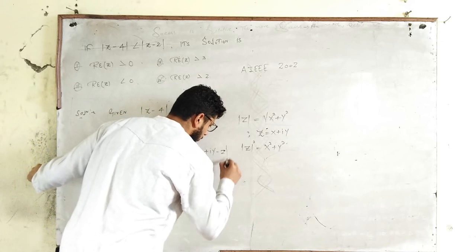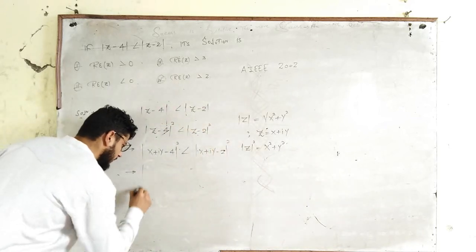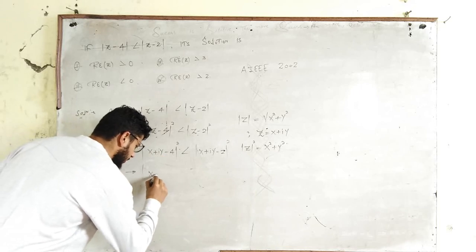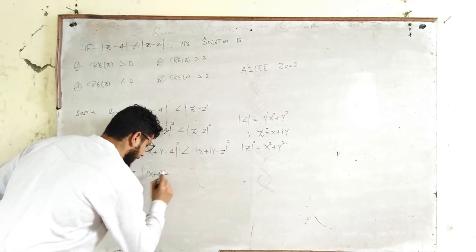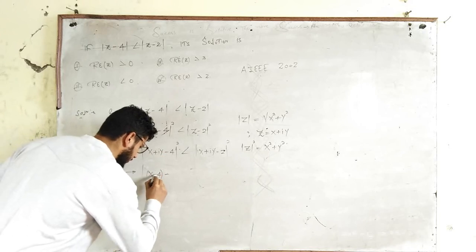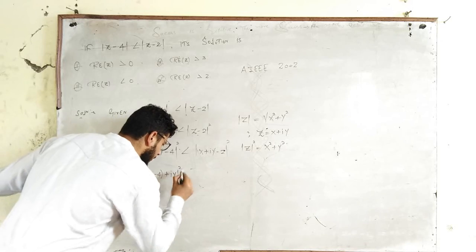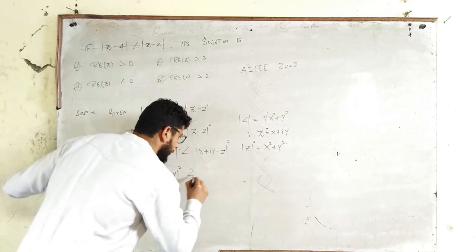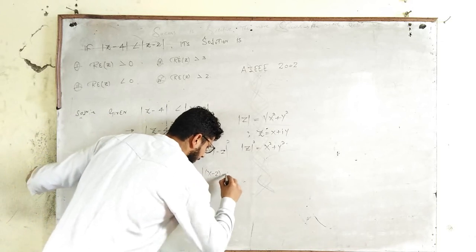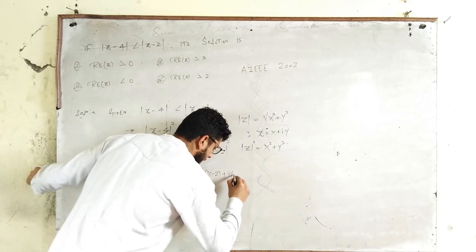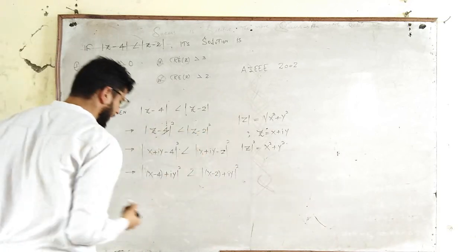I will just simplify it a little. I'll write (x - 4 + iy)² which is (x - 4)² + y² and here you will get (x - 2)² + y².